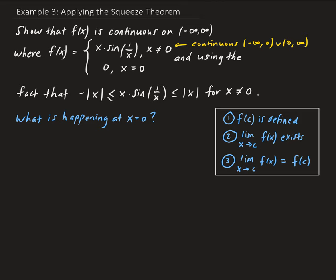We know that x times sine(1/x) is continuous everywhere except x equals zero. So now we need to see what's happening as x is approaching zero for this function — we need to find the limit of this function as x approaches zero.